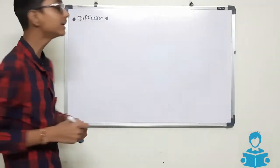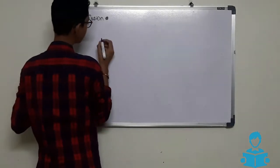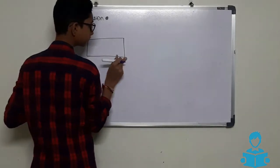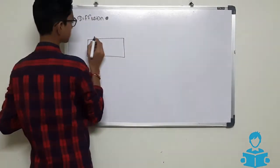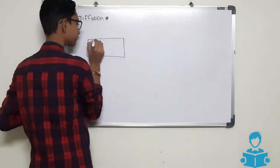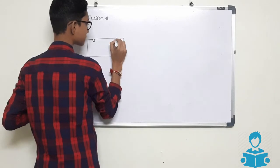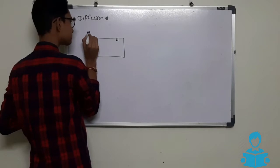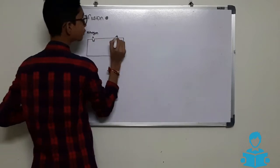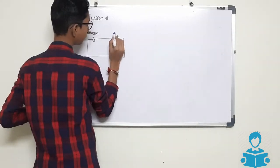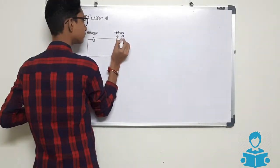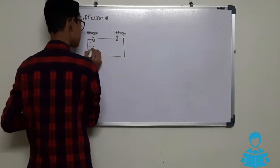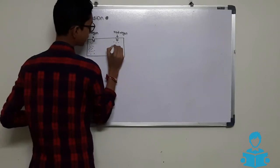We will take an example. If we have one box, and in this box there are two pipes — from one pipe we will put some nitrogen gas, and from the other pipe we will put some hydrogen gas. Now the nitrogen gas is poured here, and this is the hydrogen gas.